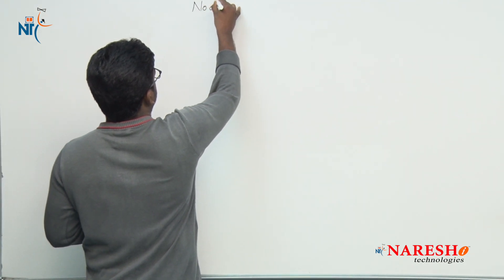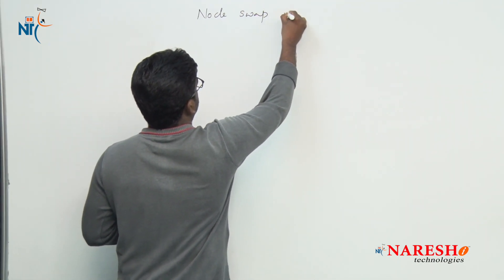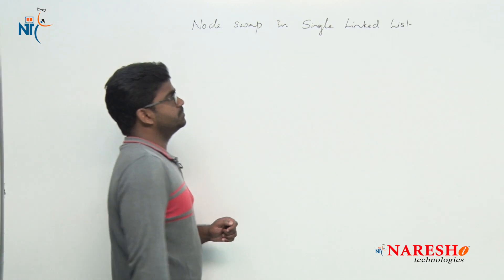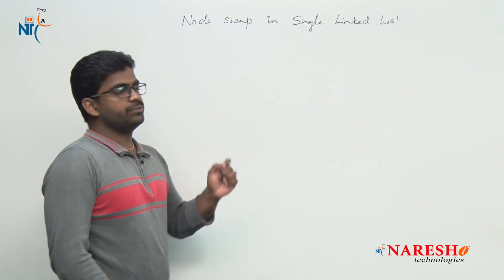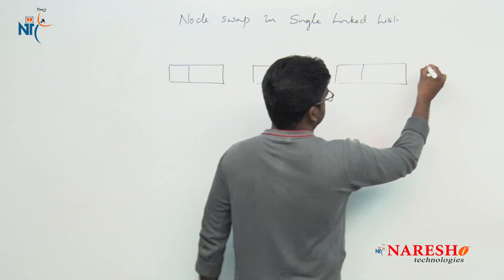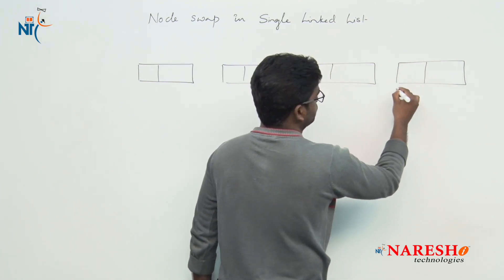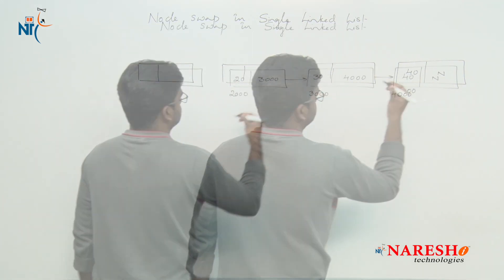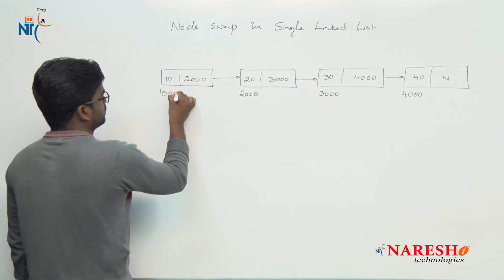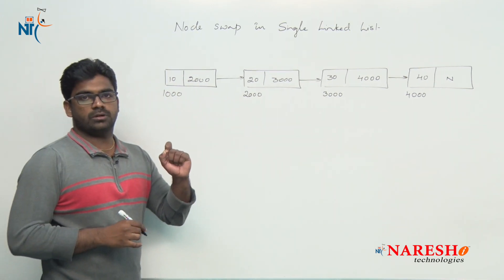We will see complete node swapping using addresses — how to swap two adjacent nodes in a single linked list. First, I will write a few nodes. Suppose these are four nodes we are taking with some values, and now the four nodes are ready in a list with the root node always pointing to the first one.